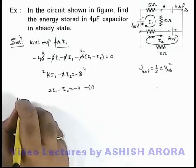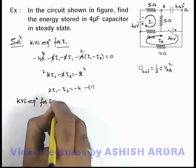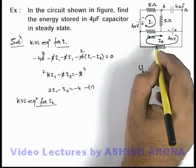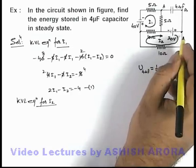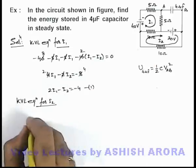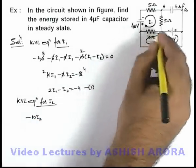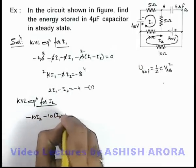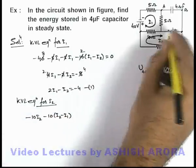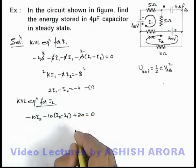Now if we write down KVL equation for i2, for the second loop we start from this terminal. In this situation it'll be a drop of minus 10i2, then in this 10 ohm resistance it'll be minus 10(i2 minus i1), then it is gain of 20 volts so it is plus 20, equal to 0.